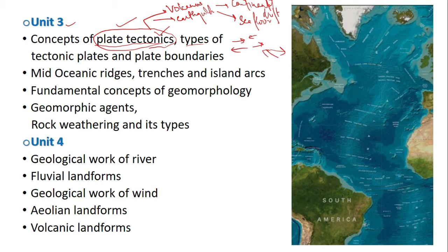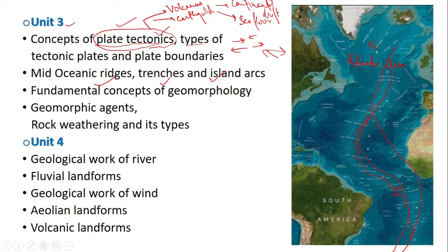Then we have mid-oceanic ridges, trenches, and island arcs. Looking at this picture of the Atlantic Ocean — the North Atlantic and South Atlantic — you can see an S-shape, and these features along it are actually the mid-oceanic ridges. They play a very important role and we'll be learning about them.